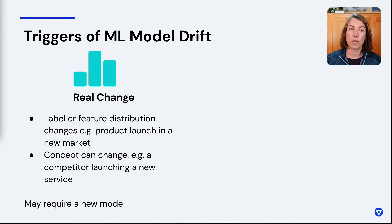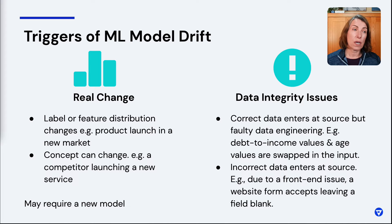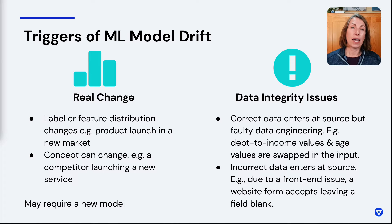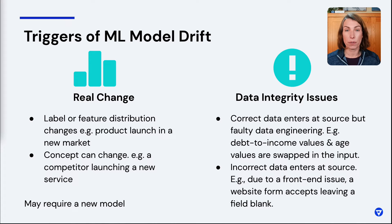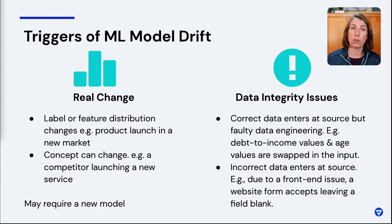You might ask: what triggers drift? Triggers would either be real changes — label, feature, concept, input or output has changed — or you might have a data integrity issue. For example, your engineering made a mistake and swapped the values of two fields, like your age value and your debt-to-income ratio accidentally being flipped. Or you're getting incorrect data or missing data — for instance, your front-end loan application had an update and is now allowing null values in a key field used for decisions. Those are the two things that tend to cause machine learning model drift.